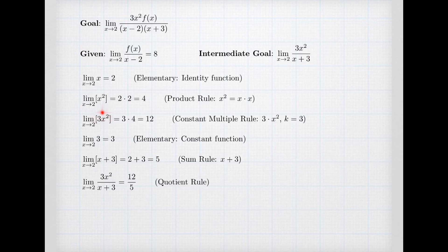Now I've got the numerator 3x² and the denominator x + 3. I know their limits. The limit of the denominator was not 0. And so I can use the quotient rule. The limit of the quotient is the quotient of the limits, 12 over 5.